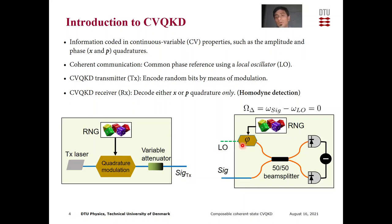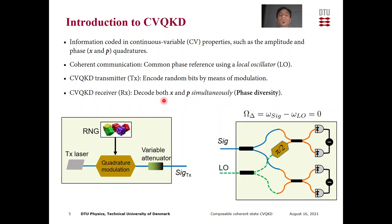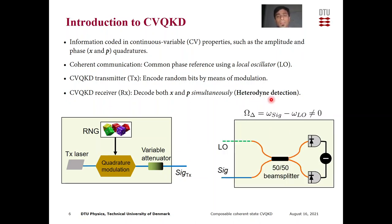By using a phase modulator on the local oscillator, which changes the phase by 0 or π/2, a CVQKD receiver can decode either the X or the P quadrature — this is called homodyne detection. One can also decode both X and P simultaneously by using two homodyne detections, where the local oscillator phase of one arm is changed by π/2 with respect to the other. Due to quantum mechanics, there is a penalty of extra noise in this architecture, known as phase diversity. There is yet another way to detect both quadratures simultaneously when the signal frequency and local oscillator frequency do not match — this is known as heterodyne detection.